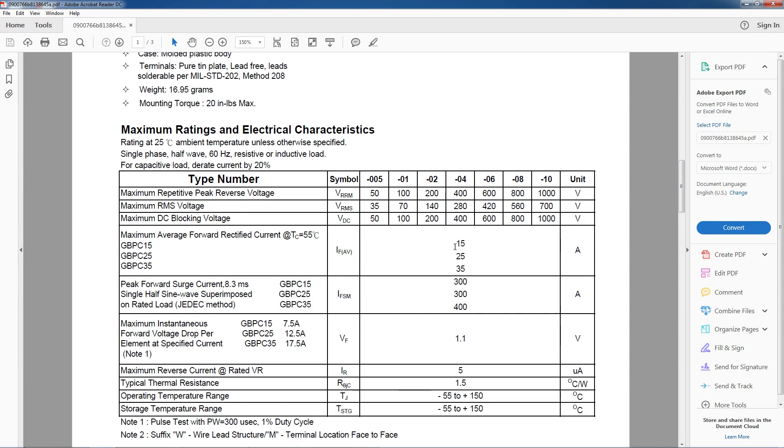The next thing to look at is how much current we're going to need to draw from our full bridge rectifier. Now my transformer can output 10 amps continuous. And again I typically like to add about 20 to 30 percent headroom minimum. So the model I bought is a GBPC15. So therefore it's rated for 15 amps continuous.